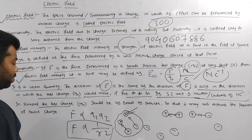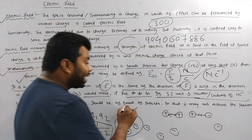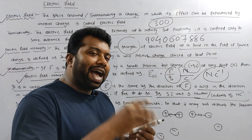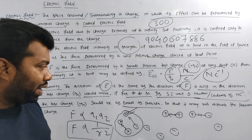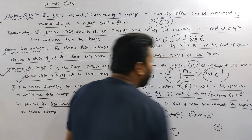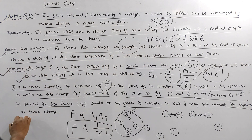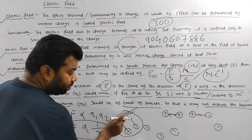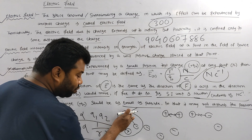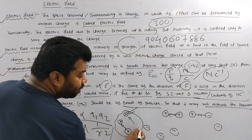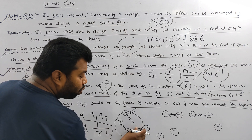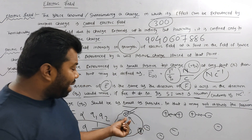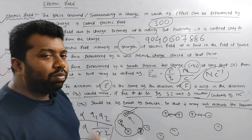The principal test charge should be as small as possible. The unit positive charge will be small — it may not disturb the position of the source charge. The charge will disturb the position of the source charge, so the charge will be small, the effect will be small. Therefore, the test charge must be very small.